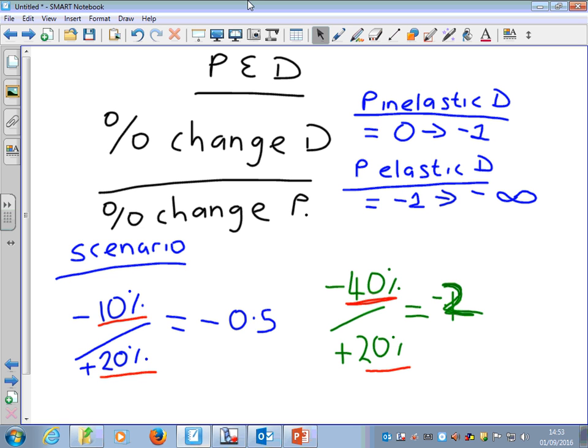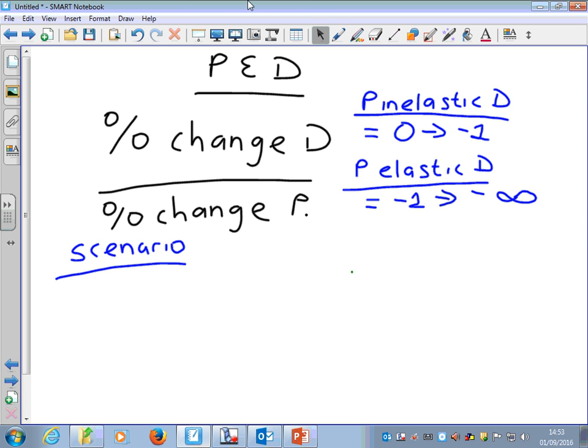So I'm going to throw one other scenario into the mix here. There is a third case. Now if we get a score of minus 1, then all it means is that we've got unitary. And let's take a little scenario to think about this. Again, Xbox games console, imagine the price was to this time increase by 10%. Again, we'd expect the demand to fall. Imagine demand fell by 10%. We'll get a score of minus 1. So when we've got unitary, what it basically means is that the percentage change in price is exactly the same as the percentage change in demand. Both numbers are exactly the same.